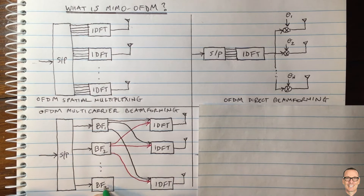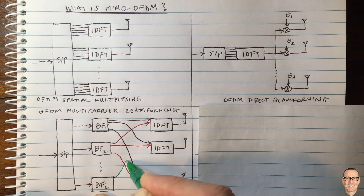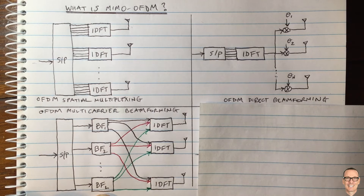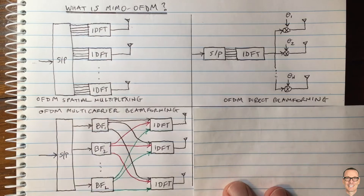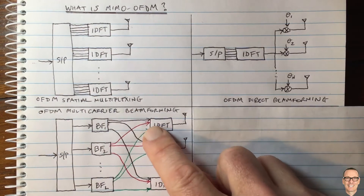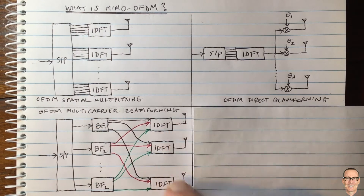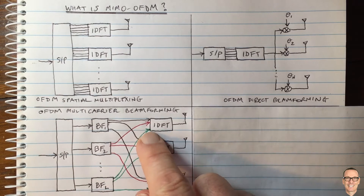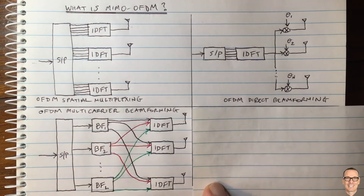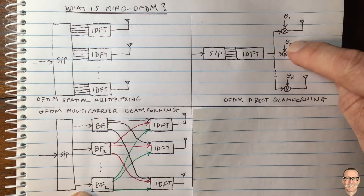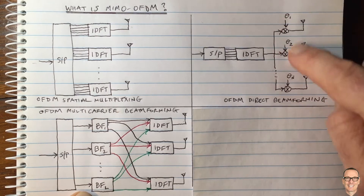The last beamformer's first output goes to the first antenna on the last subcarrier, the second to the second antenna, and the last to the last antenna on the last subcarrier. This is called multi-carrier beamforming: each carrier's beamformer provides its own set of phases, so the beam on each subcarrier is accurately calculated rather than using a single set of phases across all subcarriers.